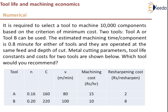The first problem: it is required to select a cutting tool to machine 10,000 components based on the criteria of minimum cost. Two tools are given — Tool A and Tool B. The estimated machining time per component is 0.8 minutes for either tool, operated at the same speed and depth of cut. The tool life constants, N and C, cutting speed V, machining cost in rupees per hour, and resharpening cost in rupees per resharpen are given for both Tool A and Tool B.